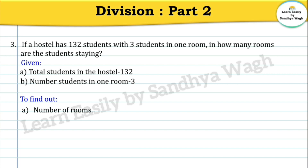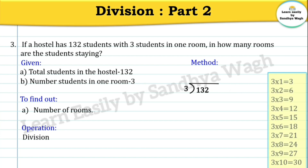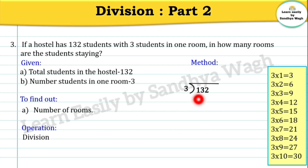Given: total students in the hostel is 132, number of students in one room is 3. We have to find the number of rooms. Operation: division. So let's divide 132 by 3. Here 132 is the dividend and 3 is the divisor. The leftmost digit is 1 — we don't have 1 in the 3s table, so 3 zeros are 0; write 0 as the quotient and subtract 0 from 1, giving 1. Bring down the next digit 3, giving 13. The nearest number in the 3s table is 12 — 3 fours are 12, so write 4 as the quotient and subtract 12 from 13, giving 1.